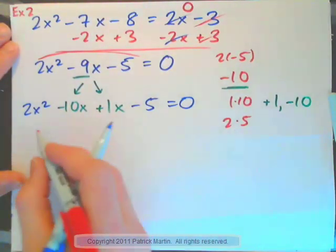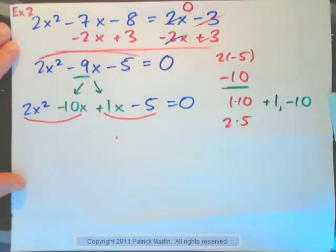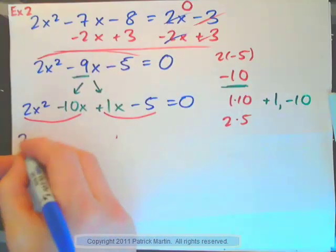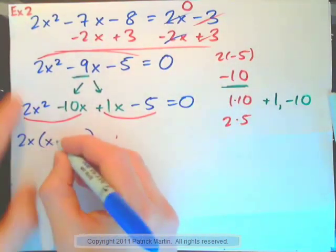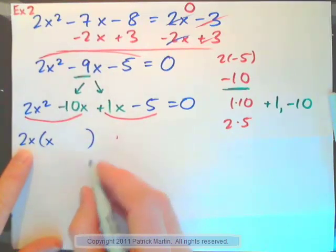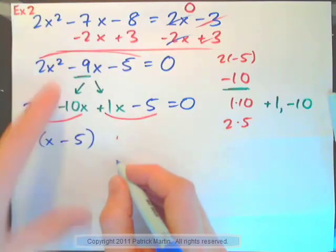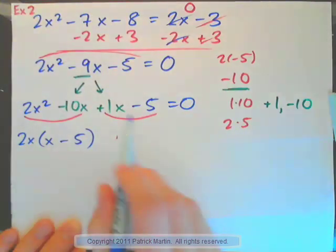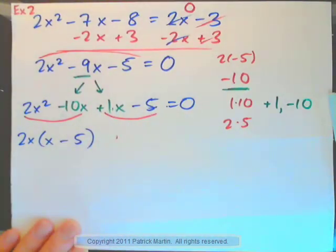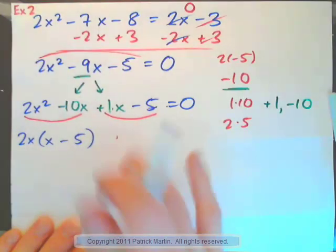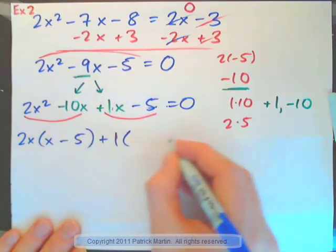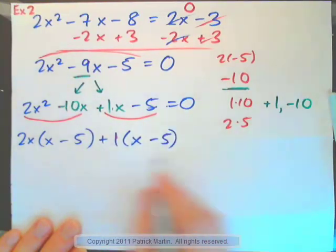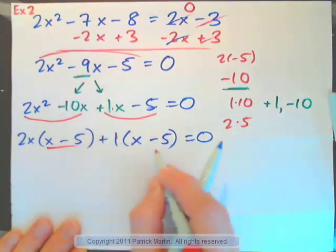Now we can factorize it by grouping. Factor these two terms, then these two terms. So if I factor these two terms, I'll pull out a 2x. 2x times x gives 2x squared. 2x times negative 5 would give negative 10x. How do you factor this one? 1x minus 5. What's the greatest common factor of these two terms? Well, there isn't any really, apart from 1, positive 1. Because 1 times x would be 1x, 1 times negative 5 would be negative 5. And that's good because we have x minus 5 here and here.